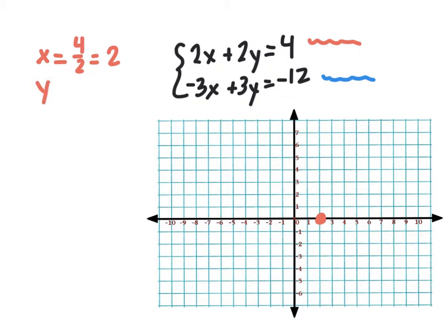For the y-intercept for the red equation, I'm going to do c over b because I'm going to plug zero in for x. And again, that's going to be 4 over 2. That's a little bit of a coincidence, but that tells us that the y-intercept for that line is 2.